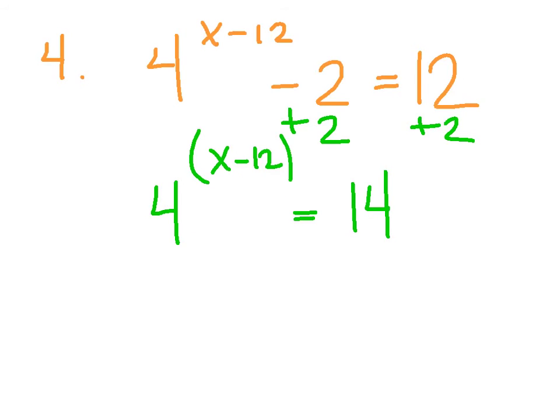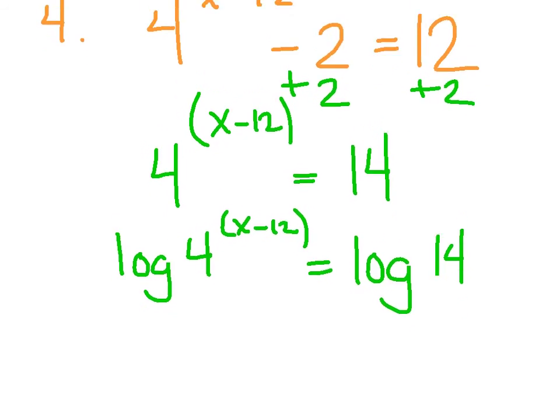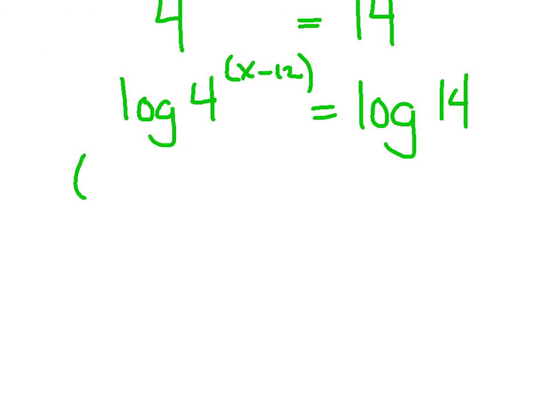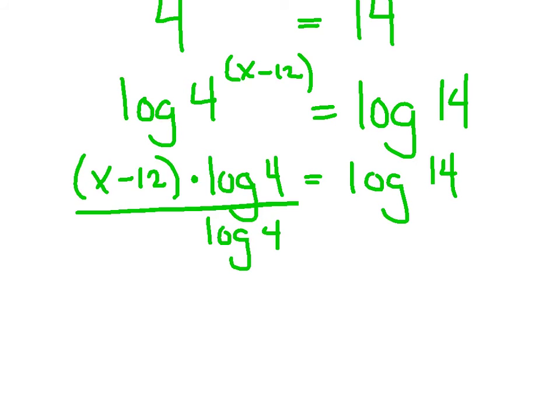So 4, wrap that exponent in parentheses, equals 14. Now that your base and exponent are by themselves together, you can either take the common log or natural log. I'm going to go common log this time. So I'm going to say the log of 4 to the x minus 12 equals log of 14. Apply that property. Bring the exponent down in front. Watch those parentheses. And my goal is to eventually get that x by itself.